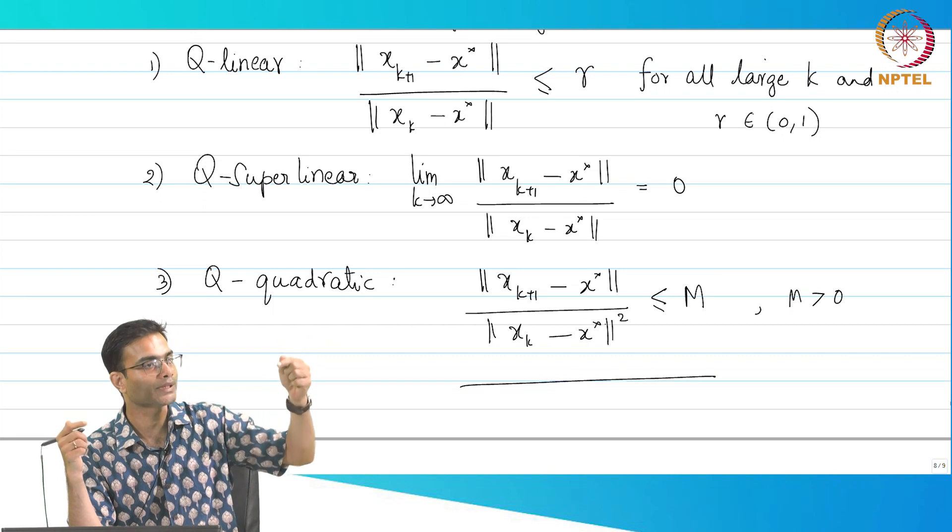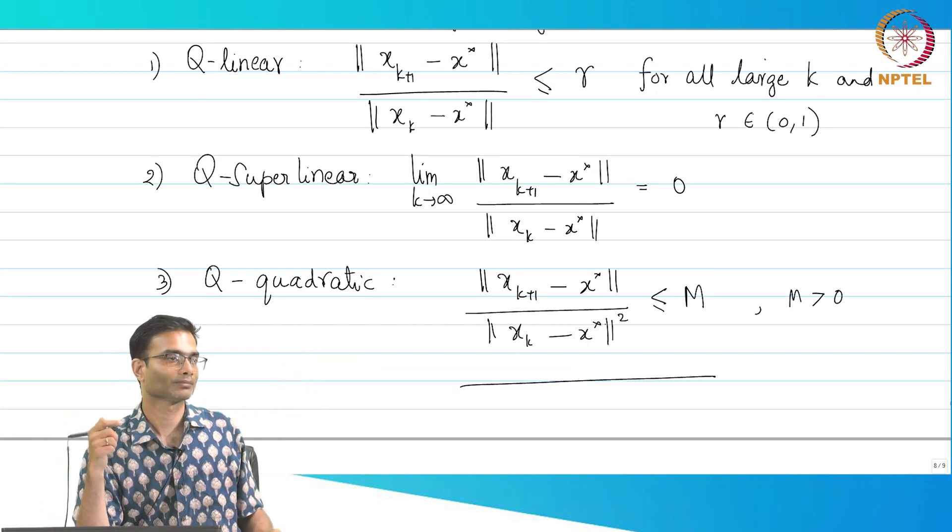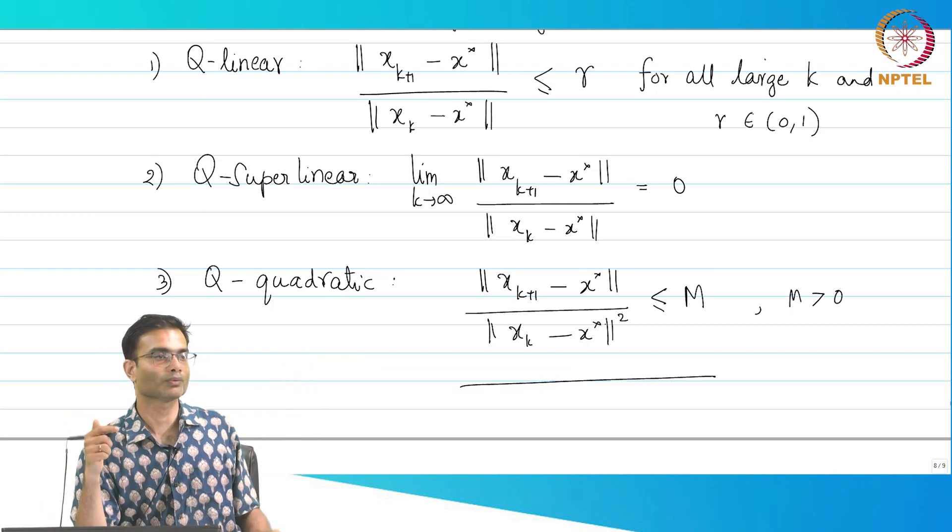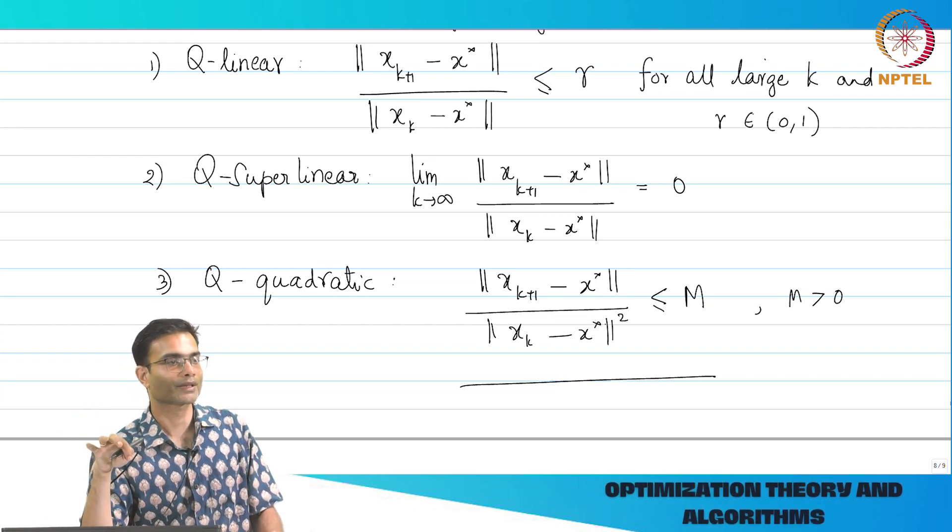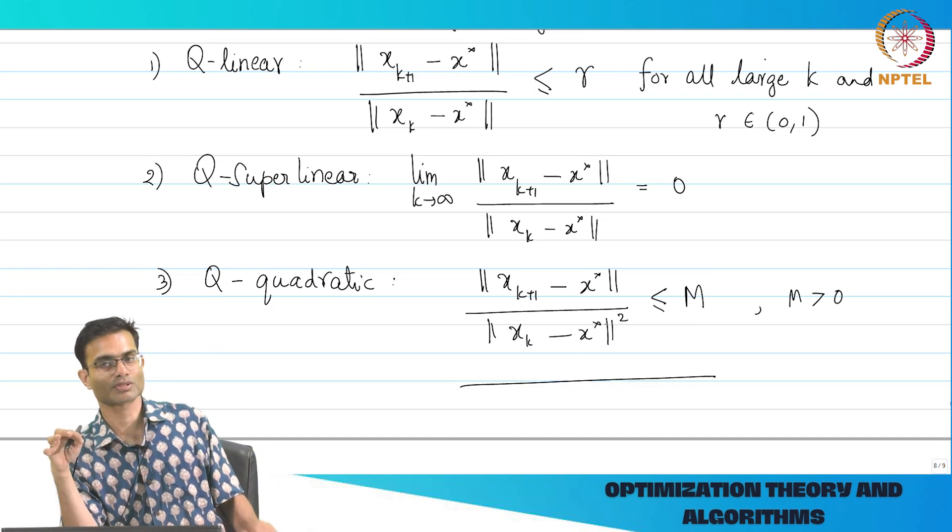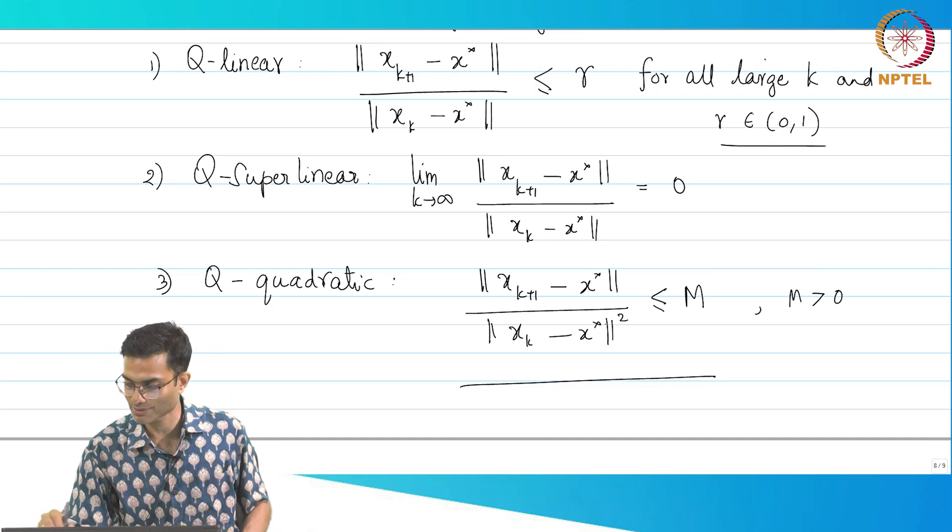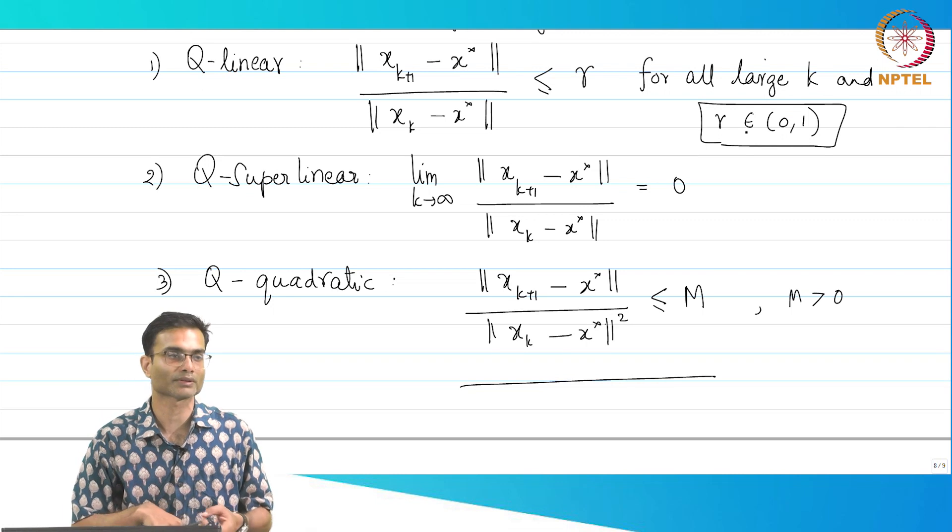So if I take k to be arbitrarily large, r will actually tend to 0. So it slips out of linear and goes into super linear, right. For linear, you will want that r to be a strictly positive number, and 1 by k factorial is not. So it is a subtle point, but that is why this is very crucial that it is an open interval 0 to 1.